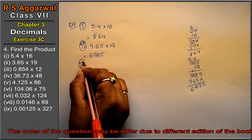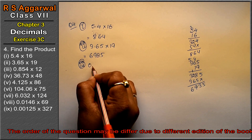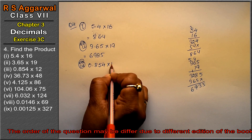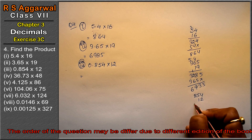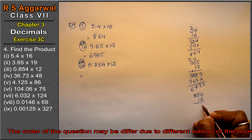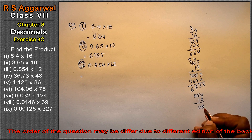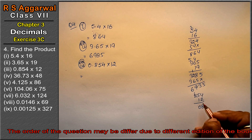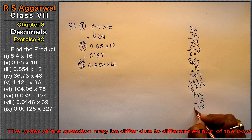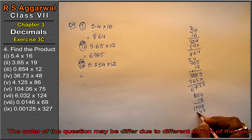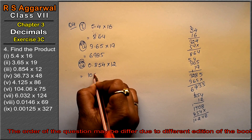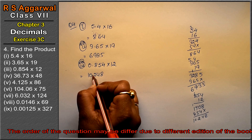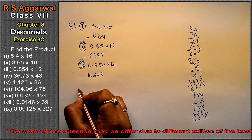Let's do the third part. Third part is 0.854 into 12. Working through: 8, 5, 4 — multiplying 854 by 12. 2 × 4 is 8, 2 × 5 is 10, 2 × 8 is 16, 17. Then 1 × 4, 1 × 5 is 5, 1 × 8 giving us 8. So here: 8, 4, 12 — carry 1, and 10. We then place the point — the answer is 10.248.